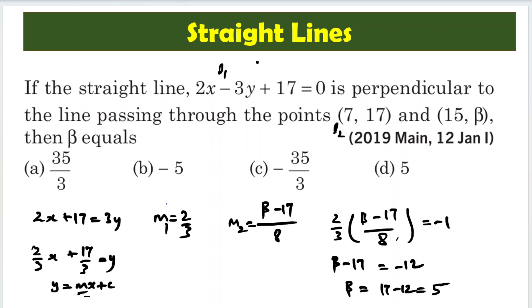The slope of this line, the line connecting these two points, is y2 minus y1 by x2 minus x1. So beta minus 17 by 15 minus 7, which is equal to 8. So that is the slope of this line. Slope of l2 is beta minus 17 by 8.